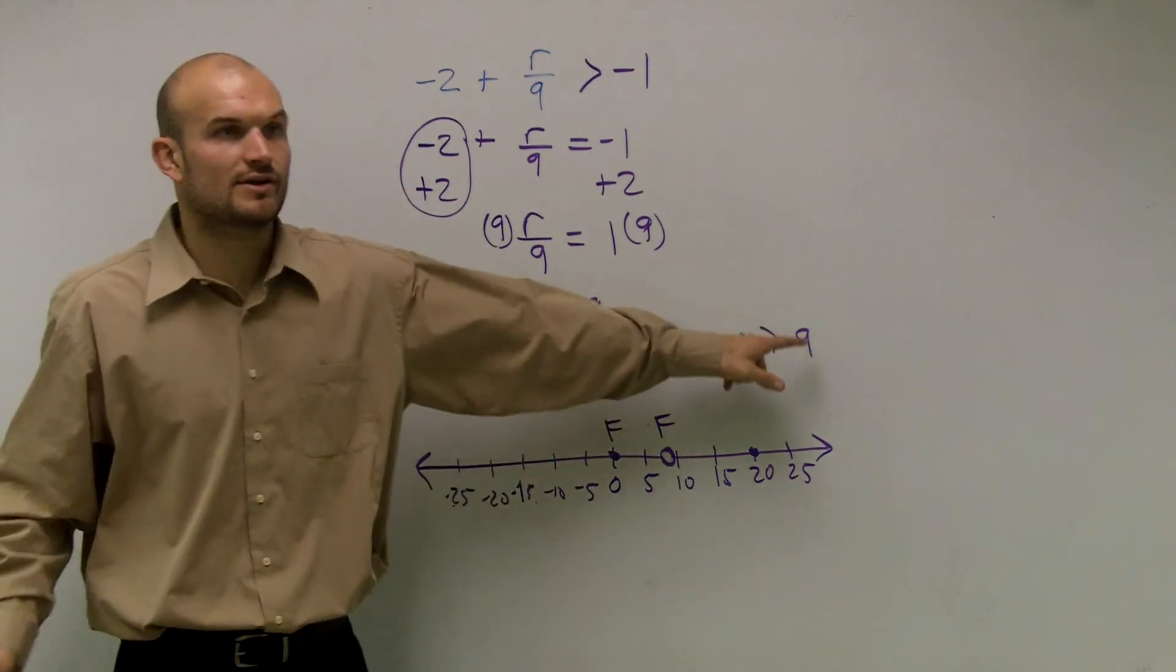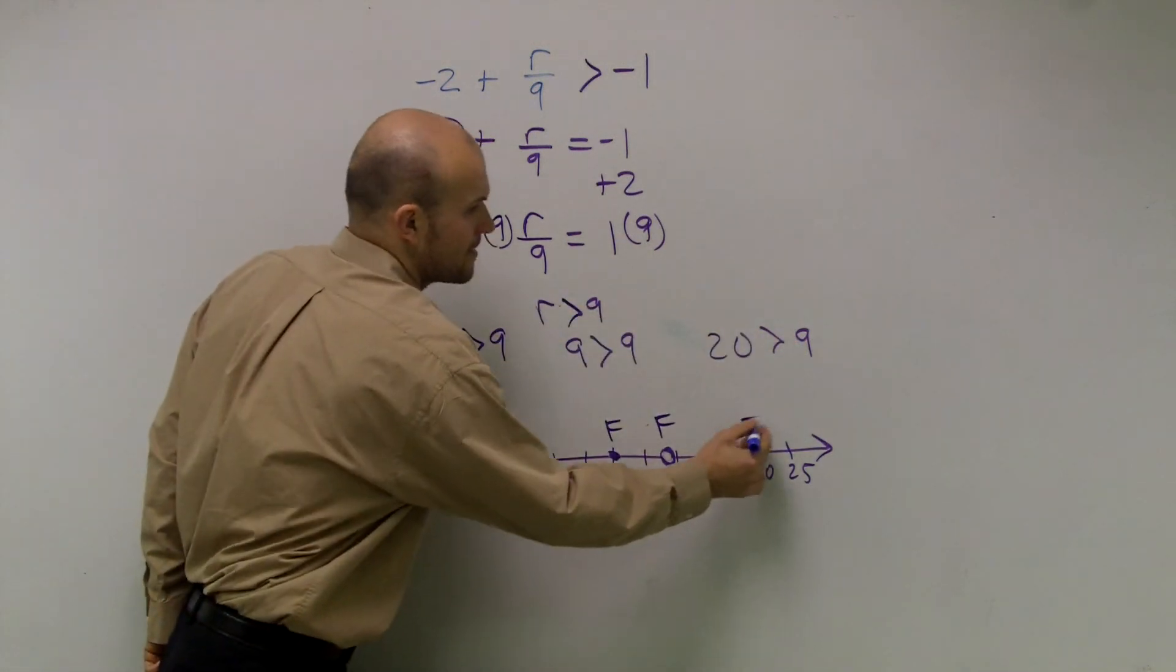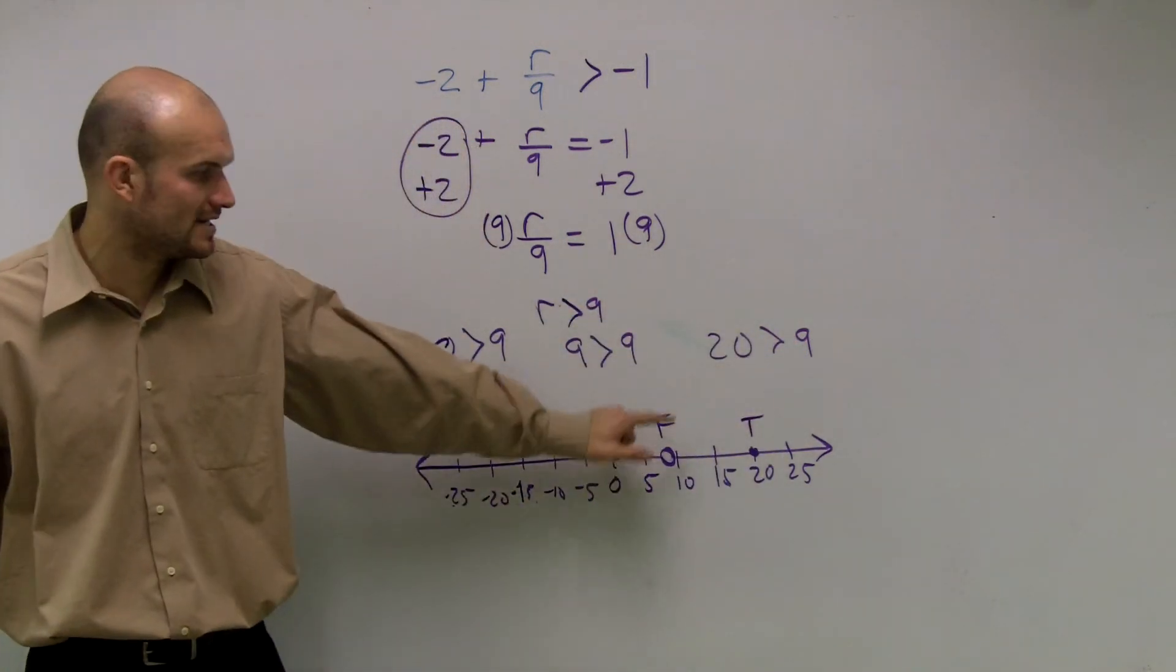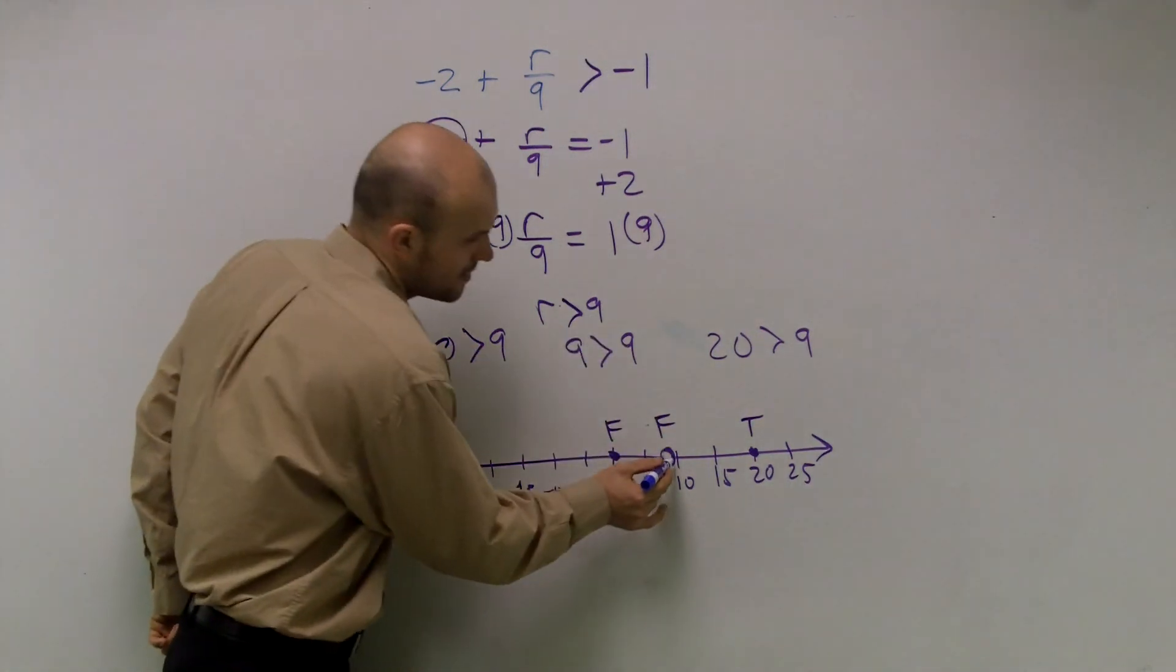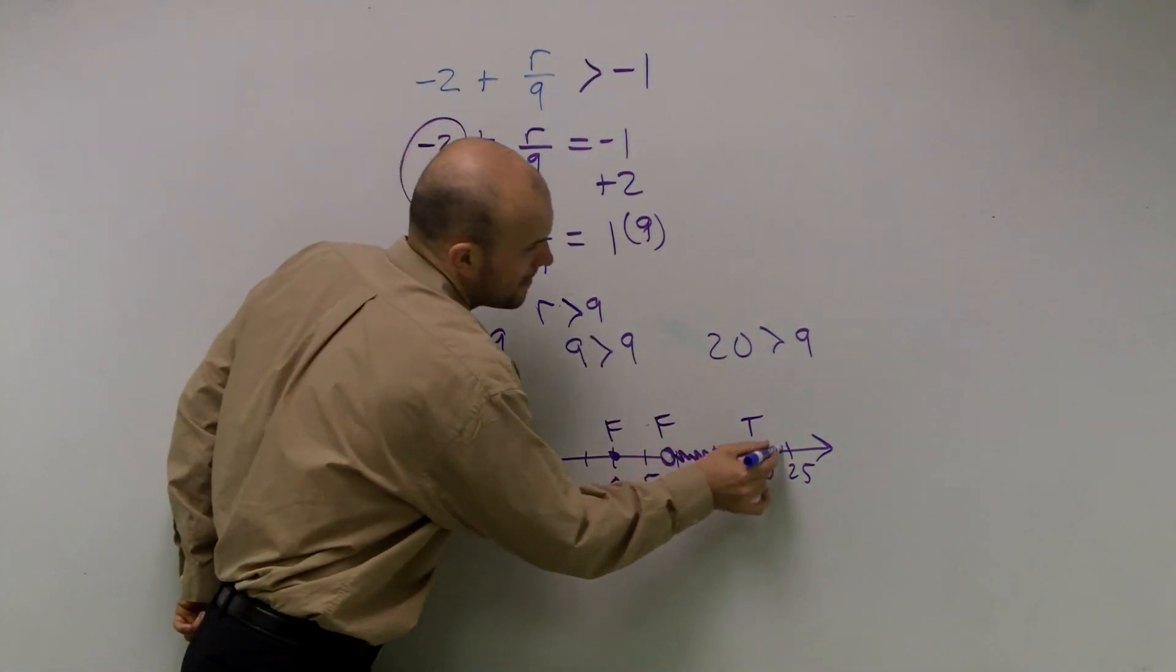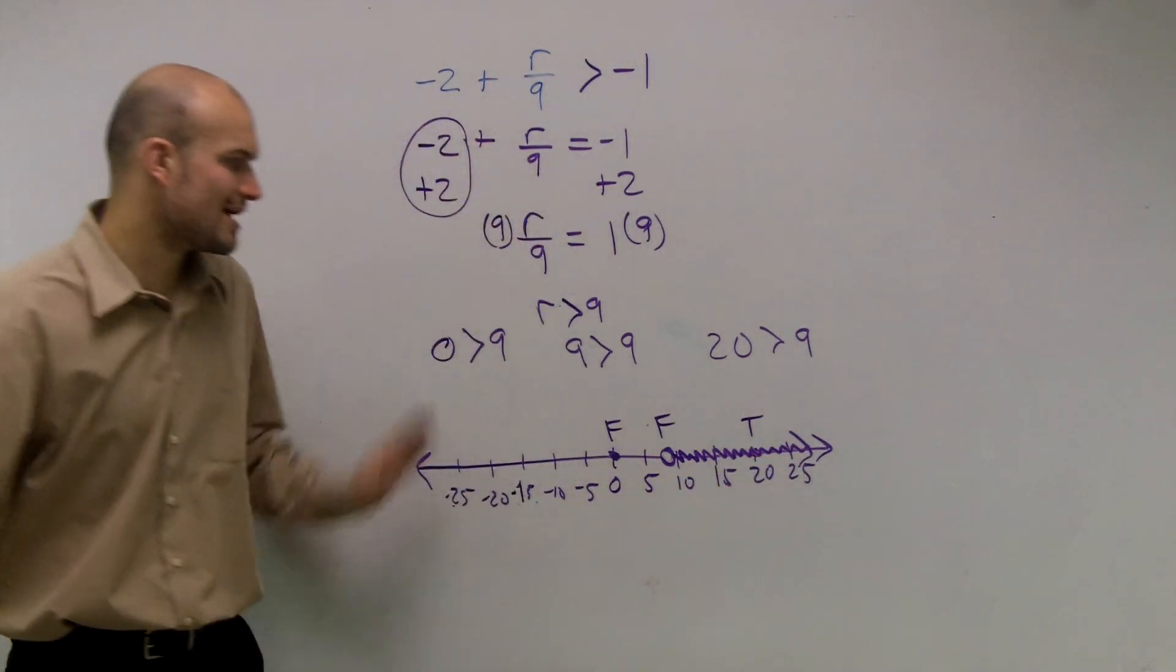Is 9 greater than 9? False. Leave it open. Is 20 greater than 9? Yes. True. Yes. So therefore, I'm going to leave my point. 9 is not part of my graph, so that's why I'm going to leave it as an open circle.